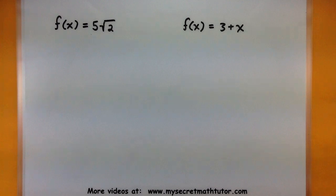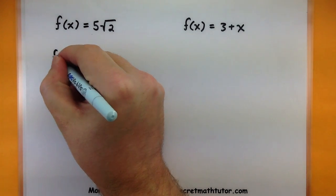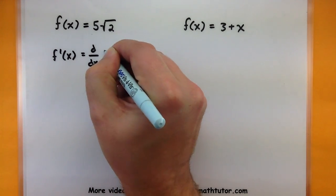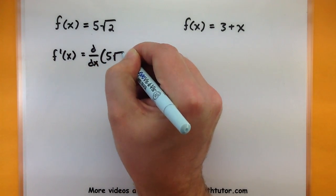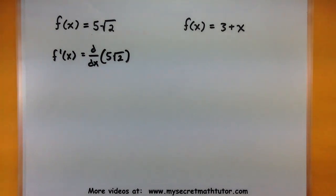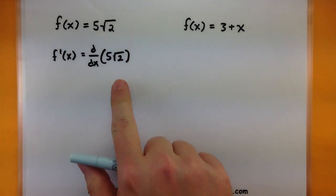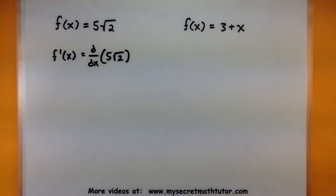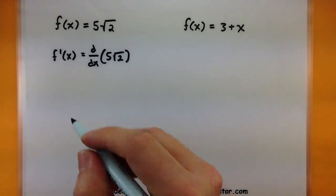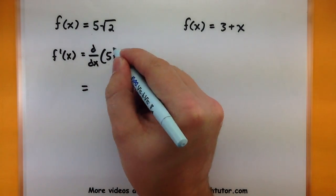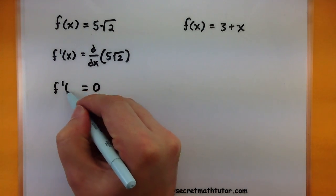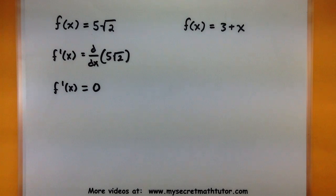Let's do this first one. I have the function f of x equals 5 times the square root of x. I'm curious what is the derivative of this function. Think very carefully about what's going on here — since there is no x in it whatsoever, this is simply a constant. According to our basic rules, the derivative of a constant is 0. So the derivative of this function f is 0.